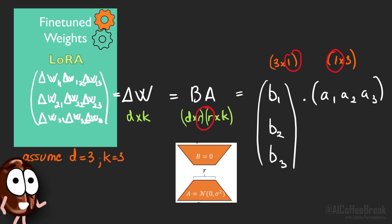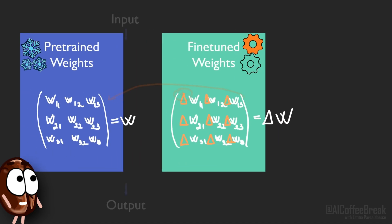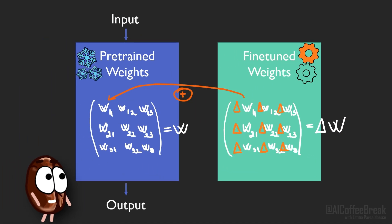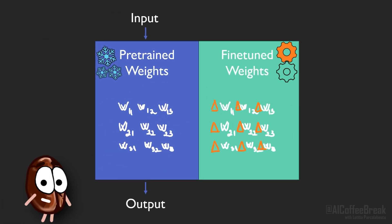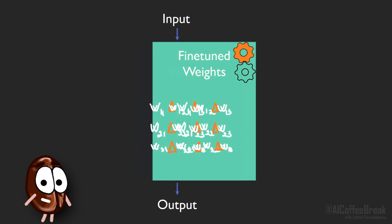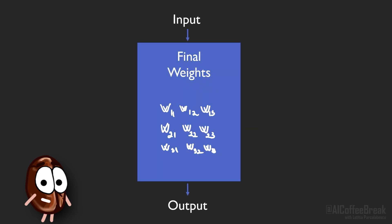So LoRa in a nutshell means that instead of tuning the large weight matrix delta W, we tune the smaller matrices A and B. Told you that it's not super complicated. So after we've found the fine-tuned weights by optimizing A and B, we should not forget to add them to the original model to make inference with the LoRa fine-tuned model. And we're done.